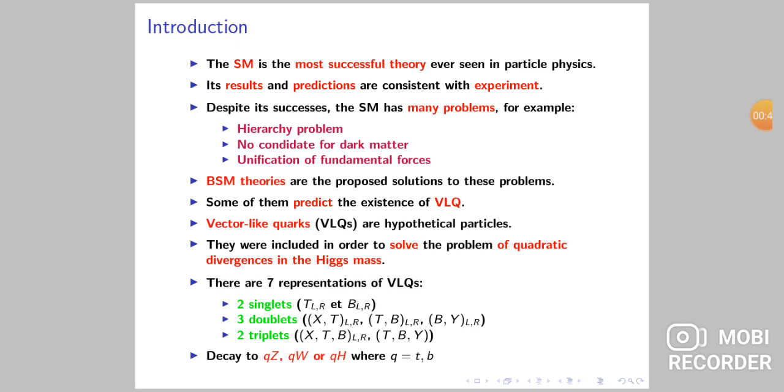There are seven types of representations of vector-like quarks. We refer two singlets, three doublets, and two triplets.